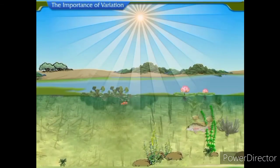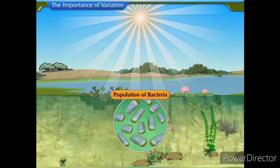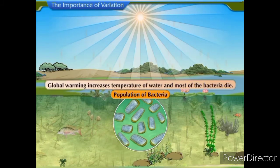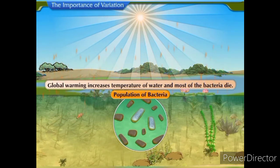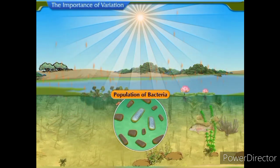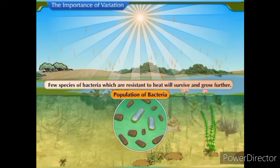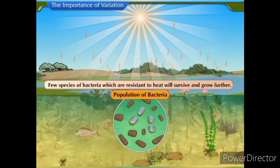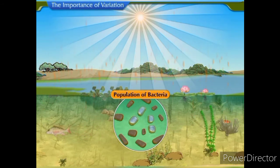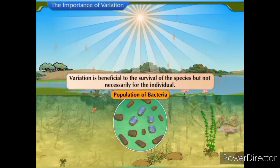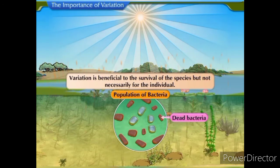For example, if a population of bacteria is surviving in water, and due to global warming the temperature of water increases, most of the bacteria will die. However, few species of bacteria which are resistant to heat will survive and grow further. Thus, we can infer that variation is beneficial to the survival of the species, but not necessarily for the individual.